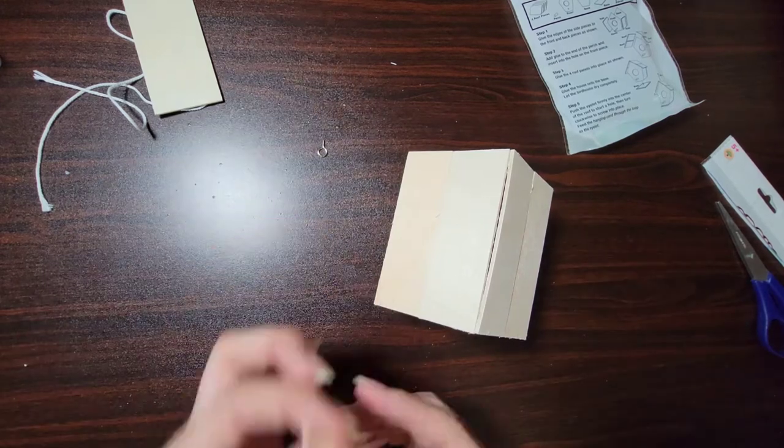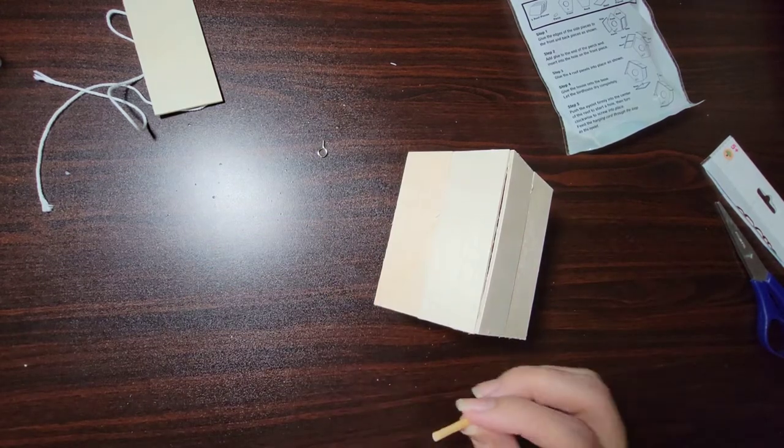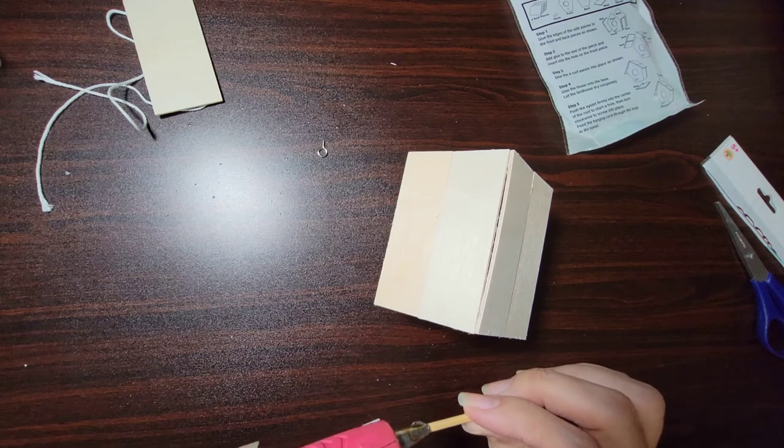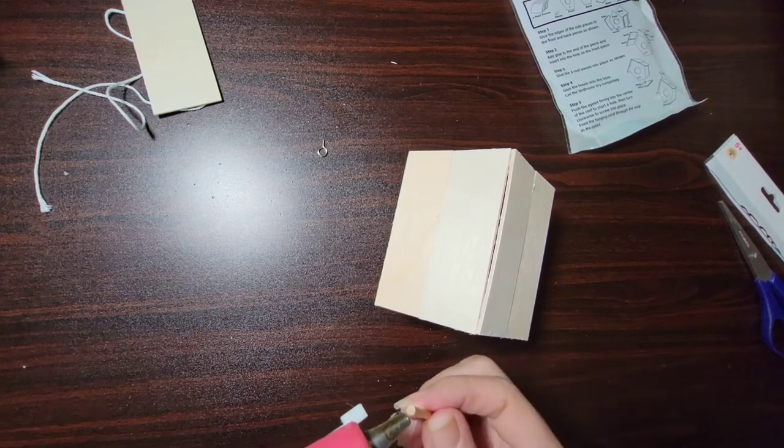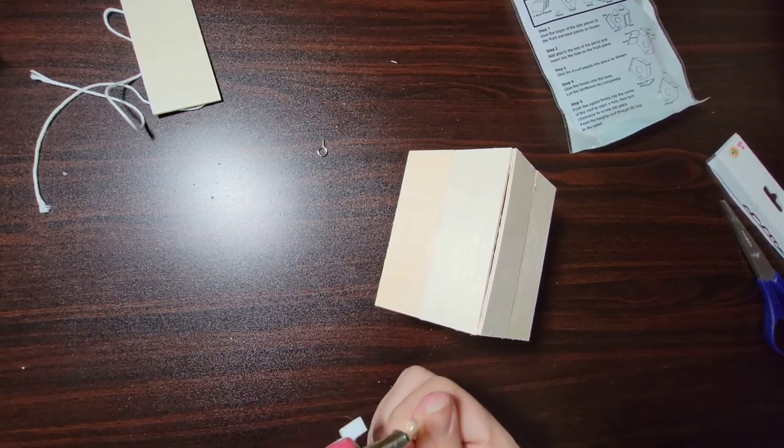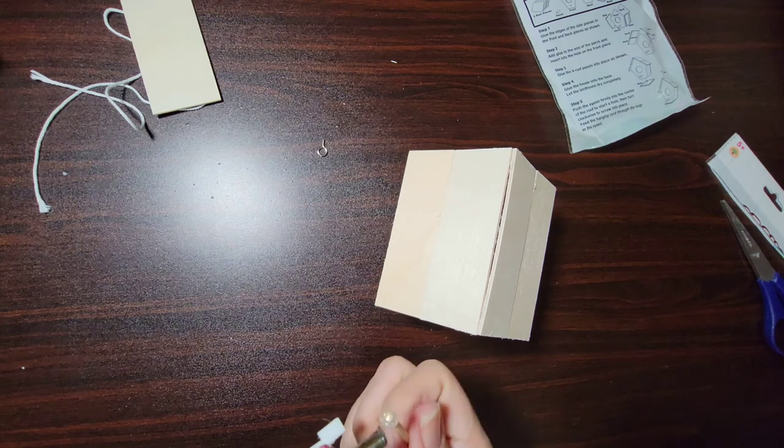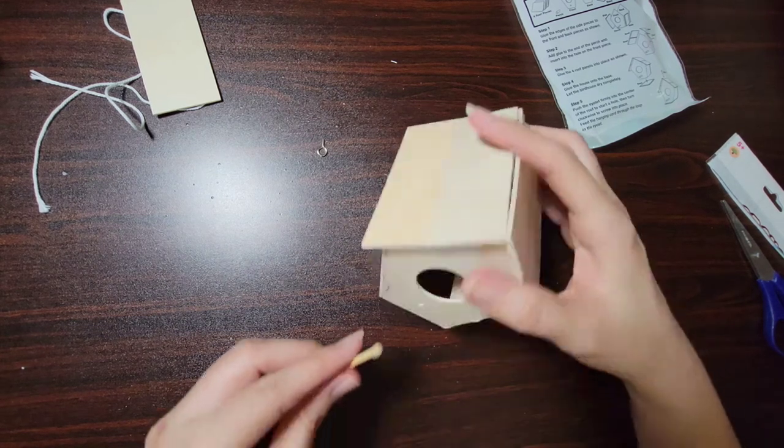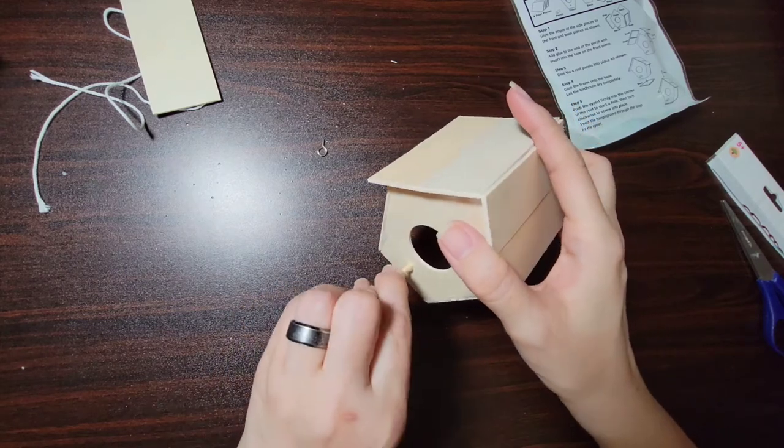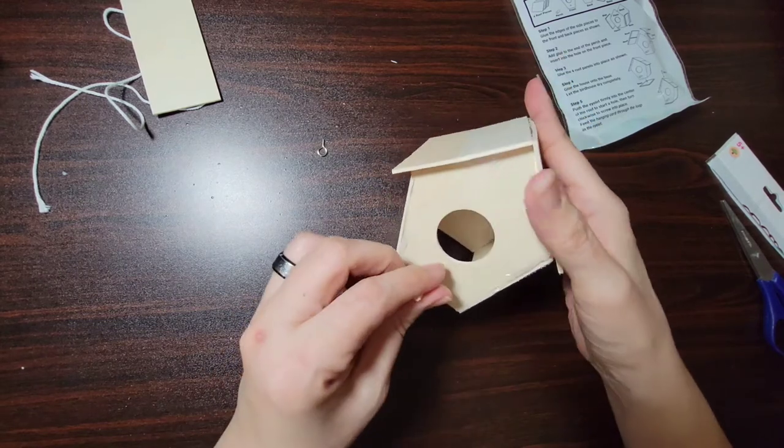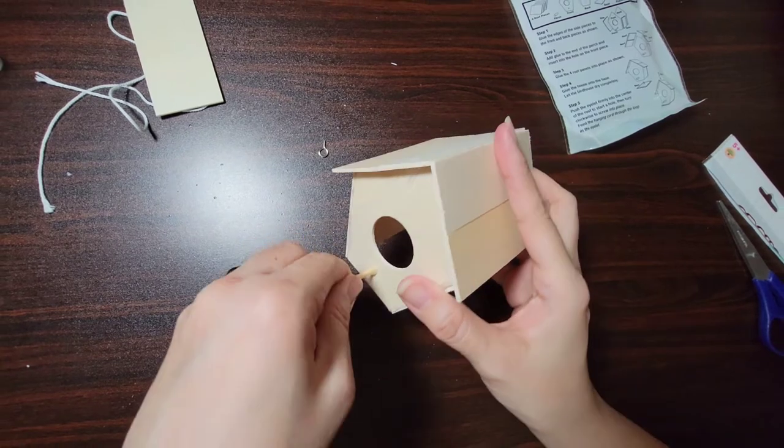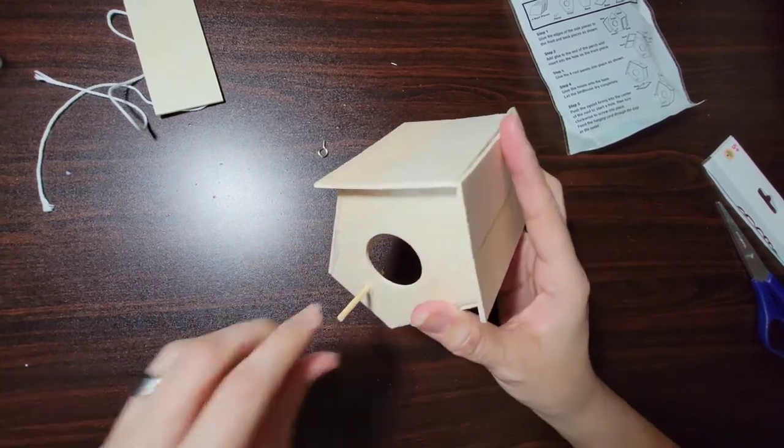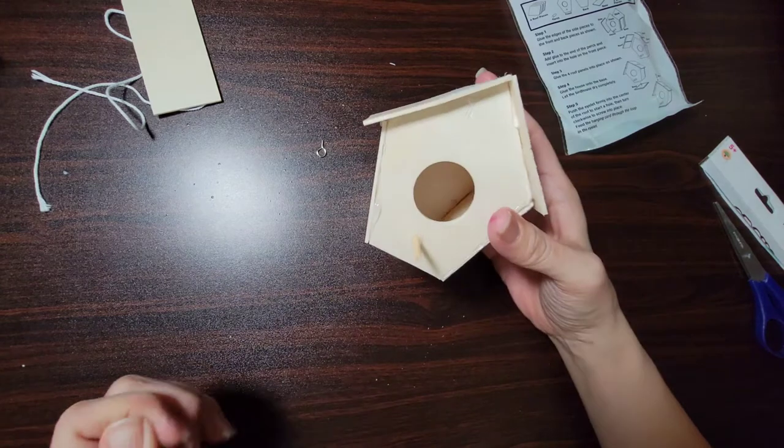Okay, so now we're going to take the perch and we're going to just go ahead and put some glue around it, and then we're just going to stick this in there. Actually it won't go in there because the hole, oh okay, I got it.